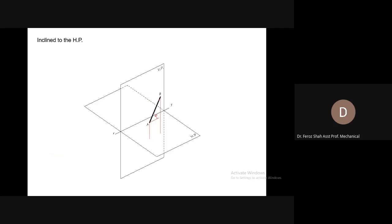This line AB is inclined to the horizontal plane because its end distances from the horizontal plane are different. End A has this much distance, and end B has a greater distance than end A. So the line is making an angle theta with the horizontal plane. If you extend or lengthen this line, it will intersect the horizontal plane — meaning the line is inclined to the horizontal plane.